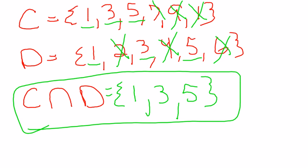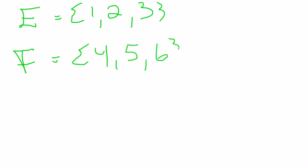And let's just do one more. We have E is 1, 2, and 3. And F is 4, 5, and 6. So E intersection F. As you can see they don't have anything in common. And we would just call this the empty set or the null set.